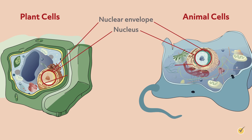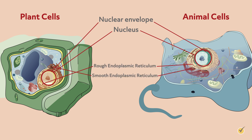The nucleus is surrounded by rough and smooth endoplasmic reticulum in both types of cells. The rough ER is rough only because it harbors another type of organelle called ribosomes that act as sites for protein synthesis.